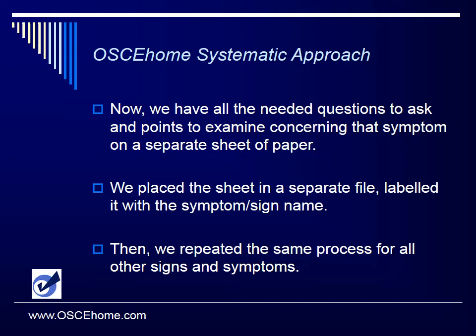We placed the sheet in a separate file and labeled it with the symptom or sign name. Then we repeated the same process for all other signs and symptoms. So imagine we now have a stack of files labeled with symptoms and signs names: cough, vaginal bleeding, abdominal pain, dyspnea, headache, heart tracing, loss of vision, and so on.